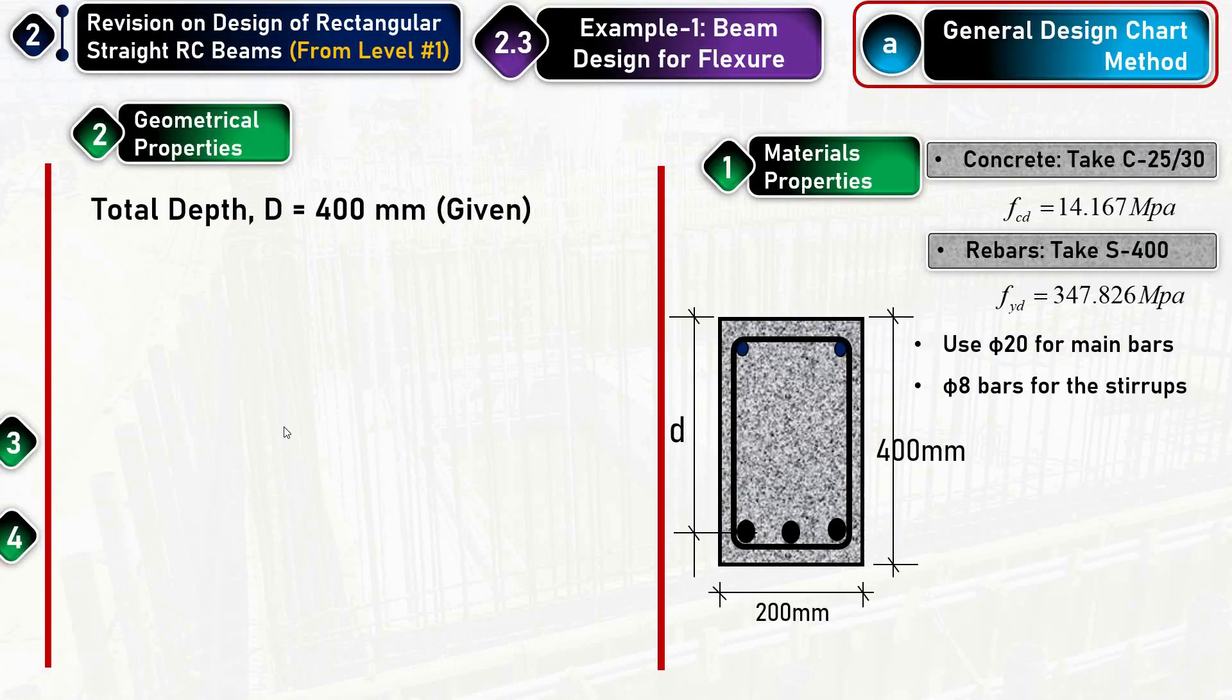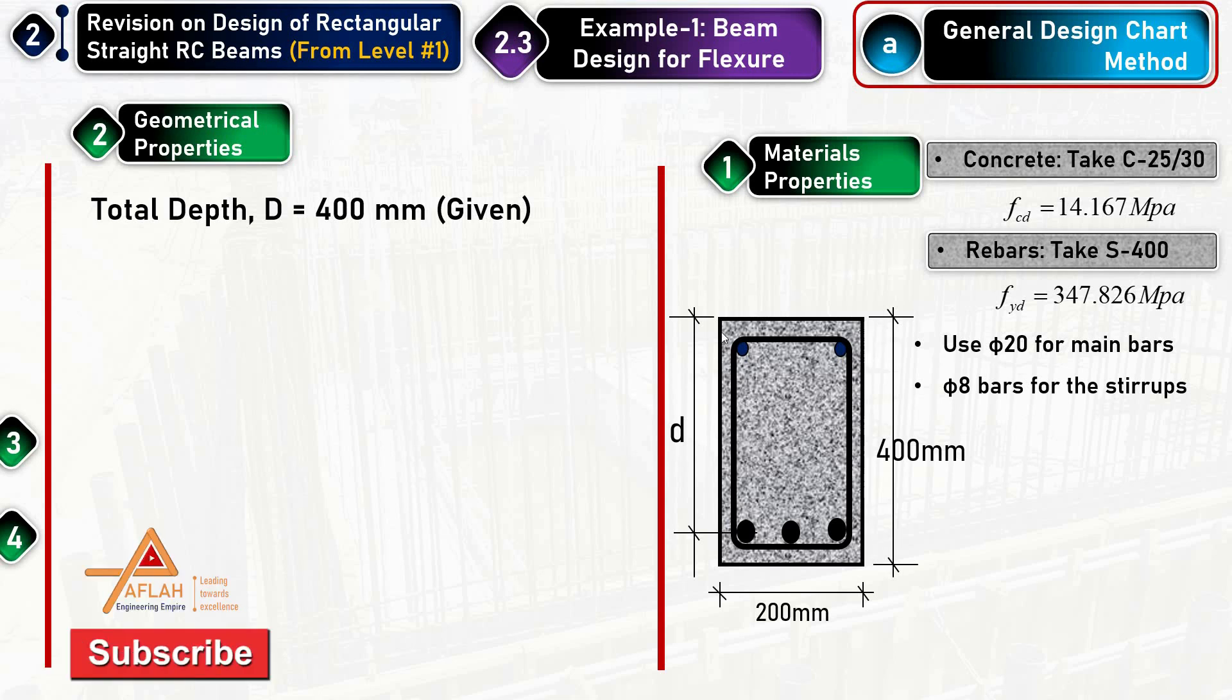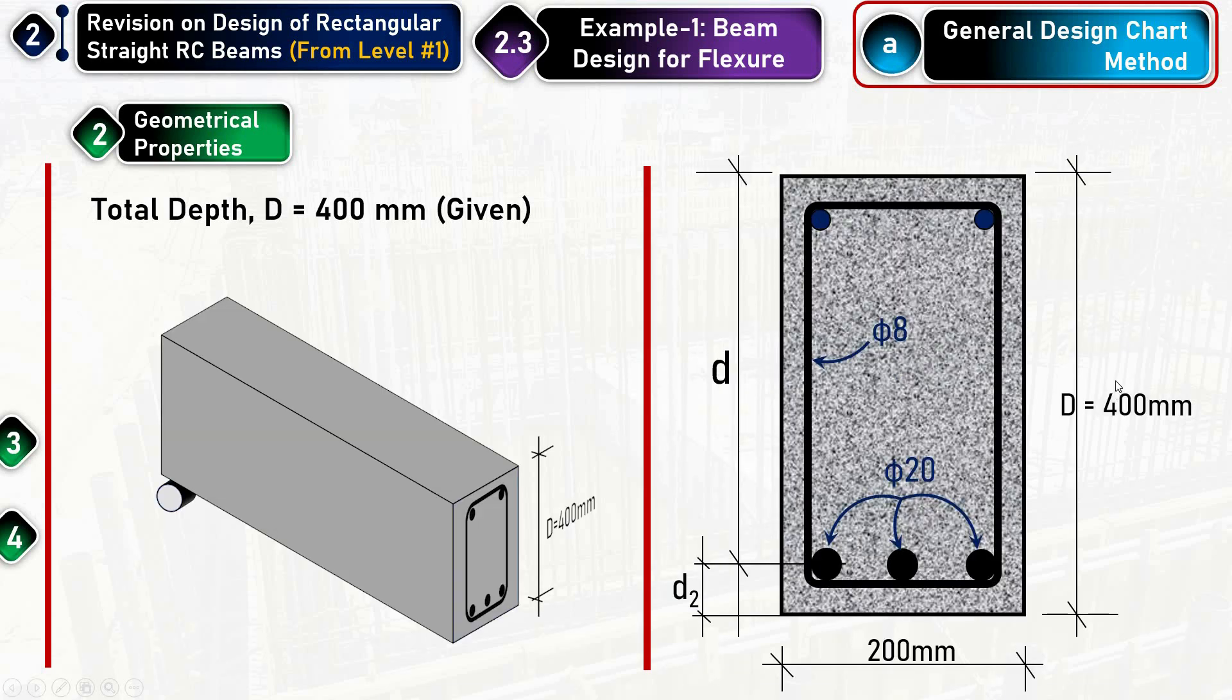Well, this question is raised most of the time by students and there is certain confusion on how to determine the effective depth. So let me go straight to the problem. If I have a beam cross-section like this, okay, cross-section, and I have a total depth D=400mm here and a width here.